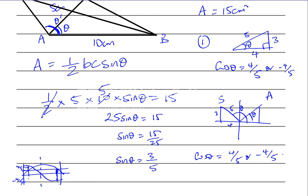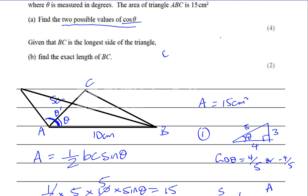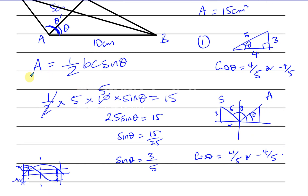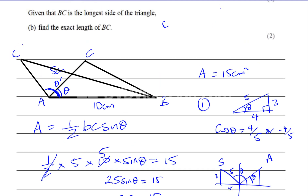The second part says: given that BC is the longest side of the triangle, find the exact length of BC. If BC is the longest side, we consider the obtuse angle, because the longest side in any triangle is always opposite the largest angle. In a right-angled triangle the hypotenuse is longest because no other angle can exceed 90°. So here, if theta is obtuse, BC will be the longest side. We therefore take the case where theta is obtuse, meaning cosine theta = −4/5.